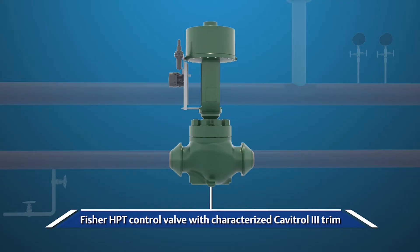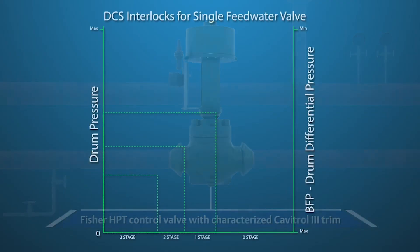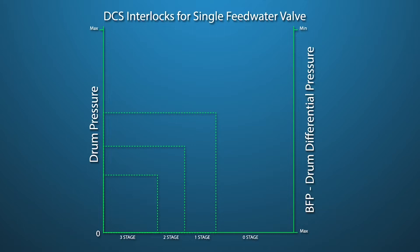If a single valve is used, the DP between the pump discharge and drum needs to be monitored by the control system. An interlock in the control system should be established to prevent the valve from opening past the anti-cavitation portion of the trim, until a non-cavitating DP is reached in the system.